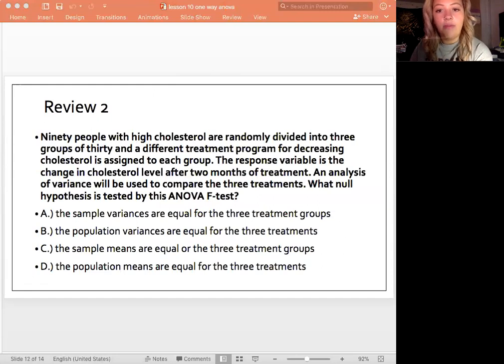Okay, so for the second one, we have 90 people with high cholesterol randomly divided into three groups of 30 and a different treatment program for decreasing cholesterol is assigned to each group. The response variable is the change in cholesterol level after two months of treatment. An analysis of variance ANOVA will be used to compare the three treatments. What null hypothesis is tested by the ANOVA test? So go ahead, if you're watching this back, pause the video and see if you can answer this one on your own. So here we're looking for a null hypothesis, which means, remember, no change. So our answer here is going to be D because we're talking about the population means. So that's why C and A are incorrect because we don't talk about samples in our null and alternative hypotheses. And remember for our null hypotheses, we're talking about the means being equal, not the variances. Variances, remember, that's something that we talk about in our assumptions. So that's not the answer. This is for our null hypothesis. So population means are equal for the three treatments.